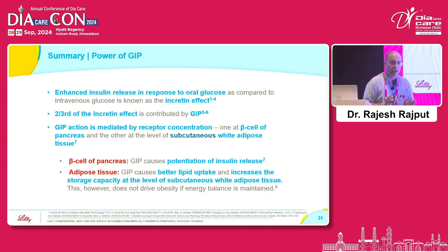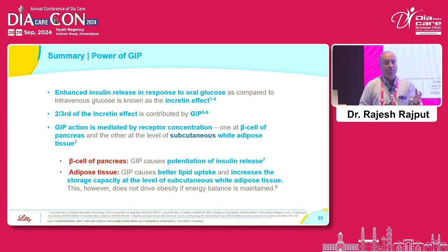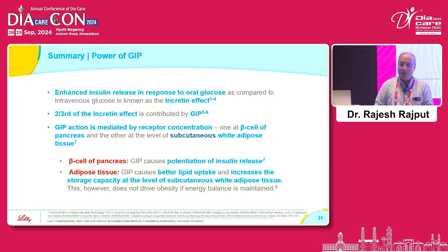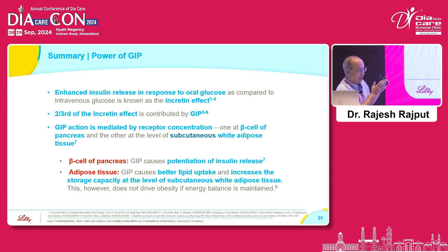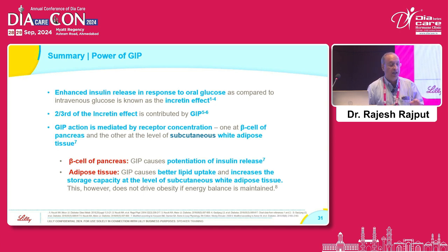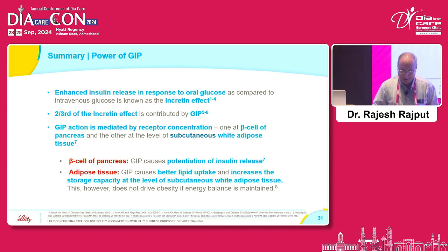In brief, GIP was discovered before GLP-1, but because of the understanding at that point it was believed to be not useful. Now we know it is an important incretin hormone — specifically for its effects on adipose tissue where it improves lipid uptake and storage, and at the pancreatic beta cell where it is more powerful than GLP-1 for insulin secretion. Together they act synergistically, responsible for 70% of insulin secretion. Thank you.